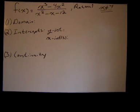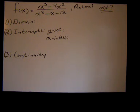Good morning. Today we're going to continue this function summary of a rational function f of x equals x cubed minus 4x squared over x squared minus x minus 12.